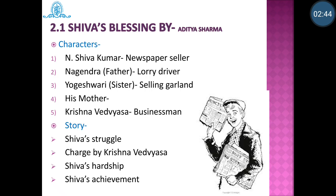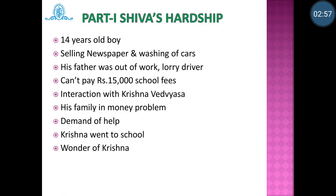The story is divided into phases for proper understanding. First is Shiva's struggle, second is the charge by Krishna Vedavya Vyasa, third is Shiva's hardship, and fourth is Shiva's achievement. In part 1, Shiva is shown as a 14-year-old boy selling newspapers early in the morning in front of houses and also doing the job of washing cars. Normally a 14-year-old boy should continue with education, but here he is striving for education while also doing different odd jobs.